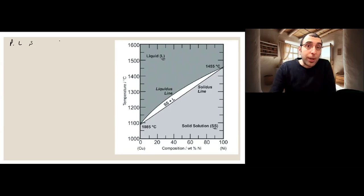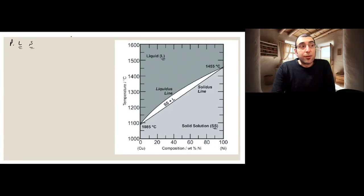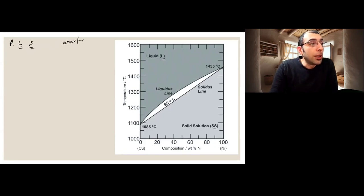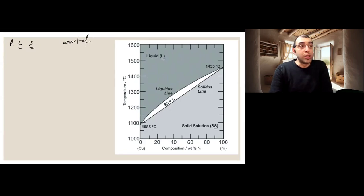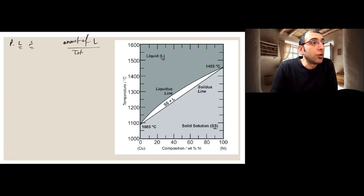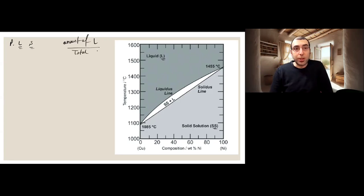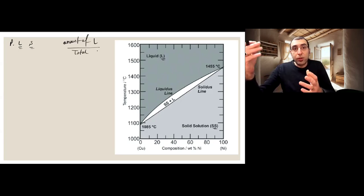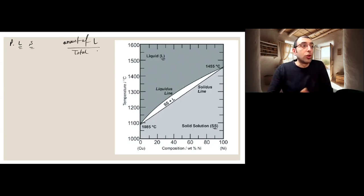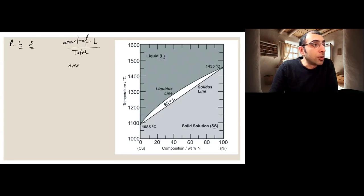When we talk about phase fraction, what do we mean? We mean the total amount of — for example — phase fraction of liquid: the amount of liquid you have over the total amount of phases available at that temperature. That's phase fraction — amount of liquid to the total amount. For solid, it's the same: amount of solid over your total amount.